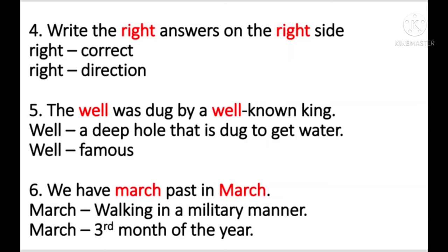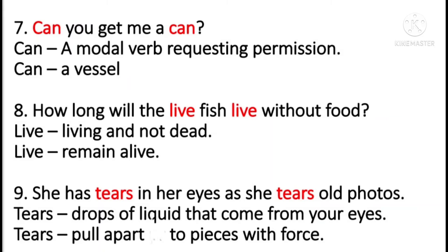And then we have march past in March. So march past is like walking in a military manner, and March means the third month of the year. Can you get me a can? So can refers to a modal verb requesting permission, and the other can is a vessel. How long will the live fish live without food? So live means living and not dead, and live means remain alive.